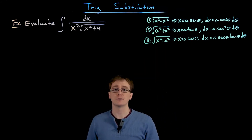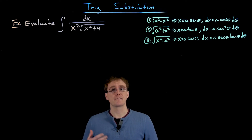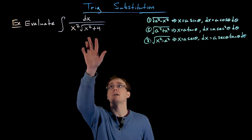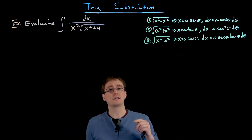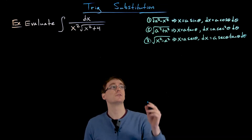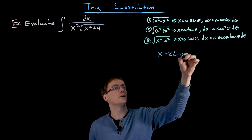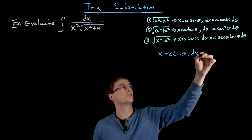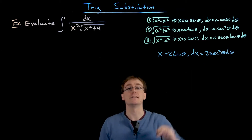Before making our substitution we have to decide what our a value will be. Sometimes we need to factor first, but here everything is set up nicely. We can see that a squared equals 4, so a equals 2. Our substitution is to let x equal 2 times tangent of theta, and the differential of x will be 2 times secant squared of theta d theta.